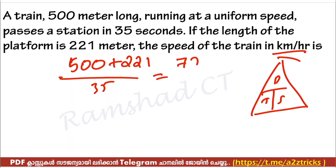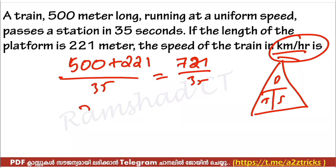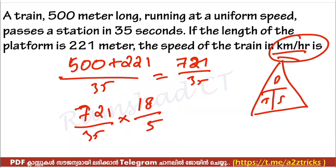We get 770 as the total distance. Dividing 770 by 35 gives the speed in meters per second. To convert to km per hour, we multiply by 18/5. The answer is 74.9 km per hour.